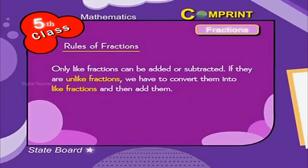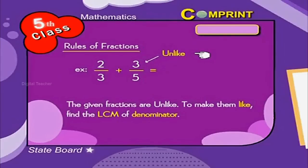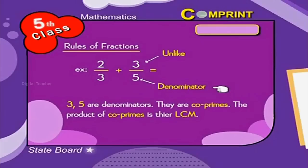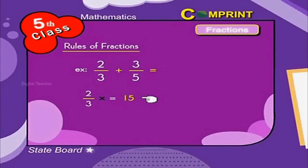Only like fractions can be added or subtracted. If they are unlike fractions, we have to convert them into like fractions and then add them. For example, 2 by 3 plus 3 by 5 — the given fractions are unlike. To make them like, find the LCM of the denominators. 3 and 5 are co-primes, so their LCM is 3 into 5, which equals 15.